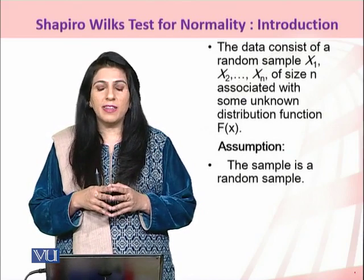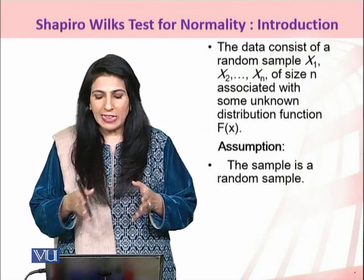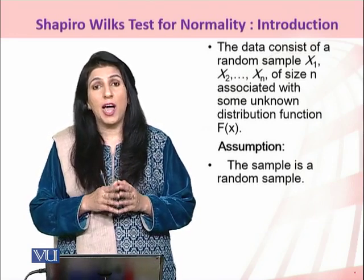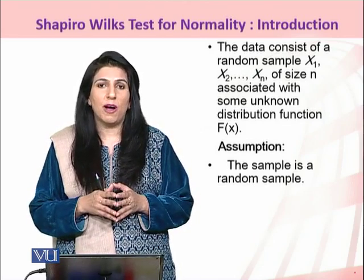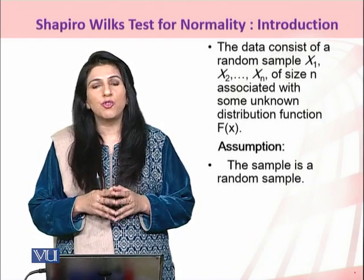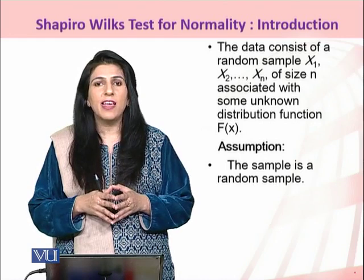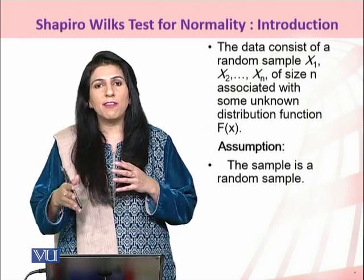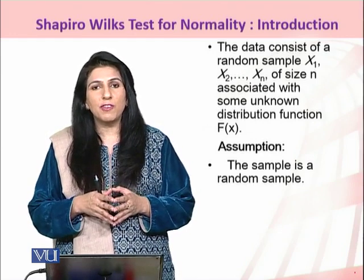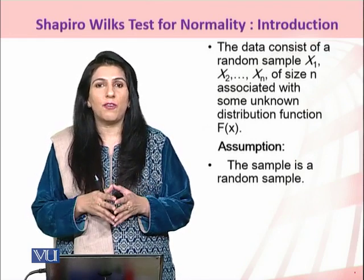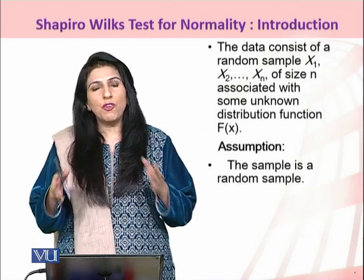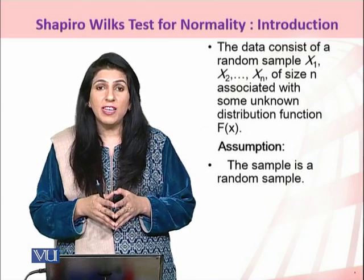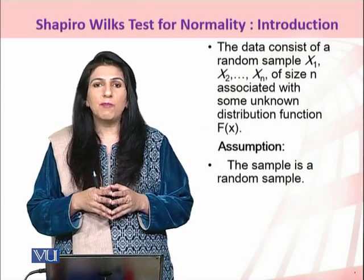The Shapiro-Wilkes test assumes that the data consists of a random sample of observations X1, X2, through Xn, associated with some unknown cumulative distribution function. The population parameters are assumed to be unknown to us. So if we have data drawn from a population for which the parameters are not known, we can make use of the SW test. Before applying the SW test, the assumption is that the sample observations must be random in nature.